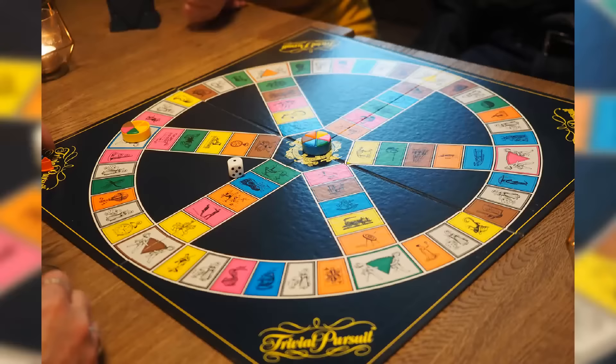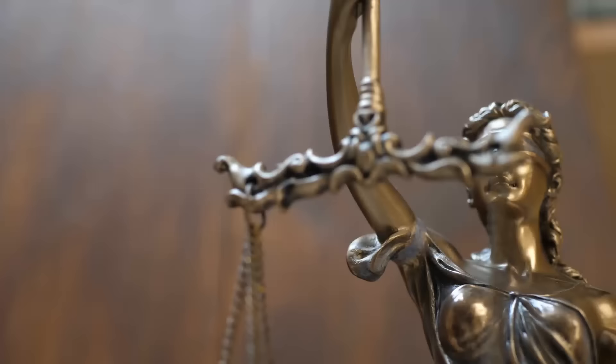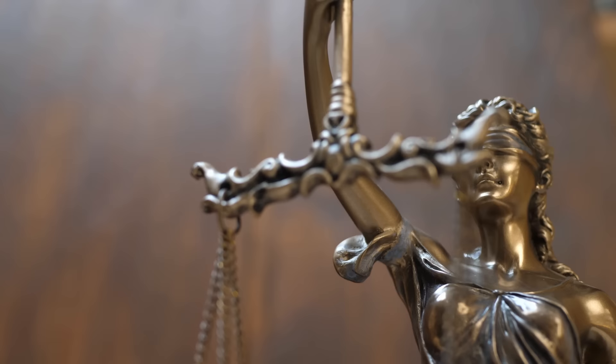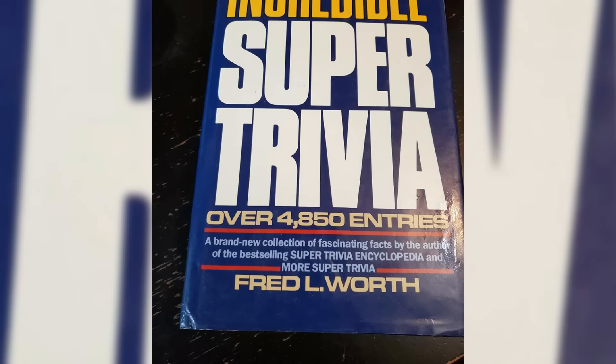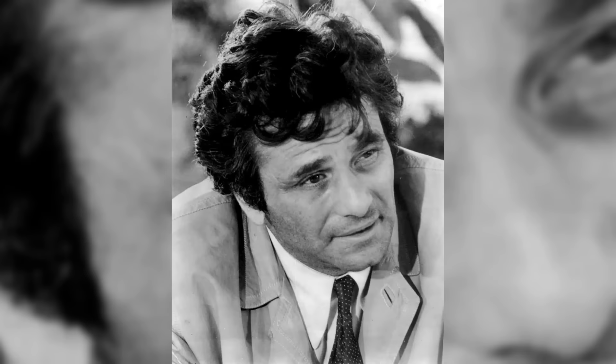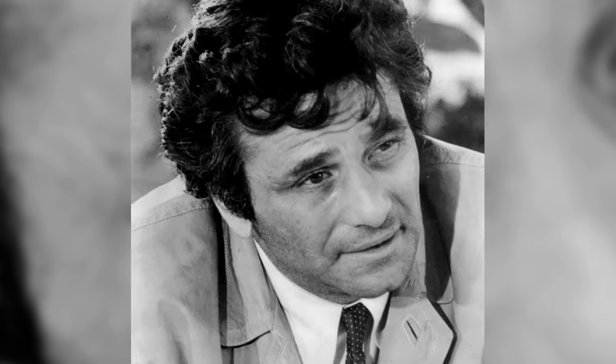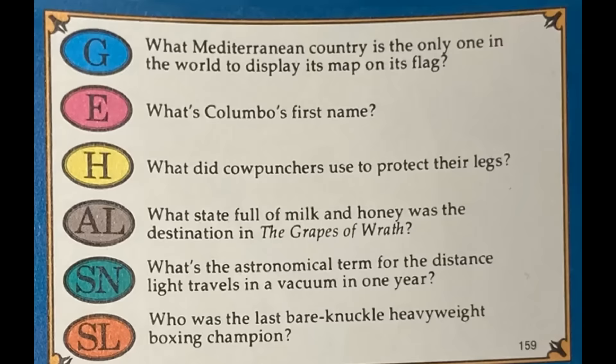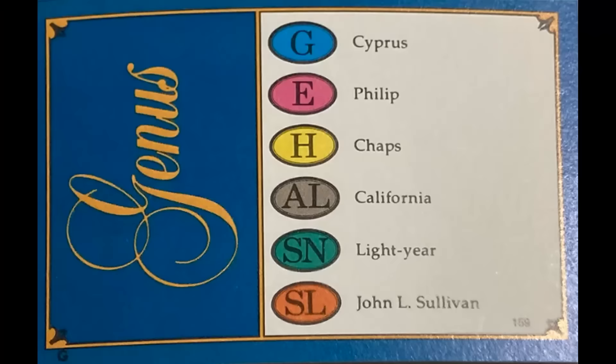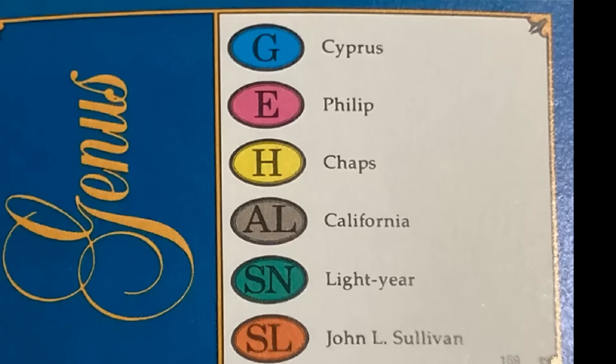Yet, amidst its wild success, Trivial Pursuit faced a formidable legal challenge. A significant portion of the game's questions were discovered to have been directly copied from Fred Wirth's book, Super Trivia. Wirth was able to prove this because he intentionally planted an error in his book. The question about Detective Columbo's first name incorrectly listed the answer as Philip, whereas the correct answer is actually Frank. This incorrect answer found its way into Trivial Pursuit, sparking Wirth's demand for compensation from the game's sales, given that the entire premise of Trivial Pursuit hinges on answering trivia questions, many of which were painstakingly researched and written by him.